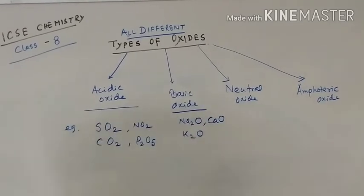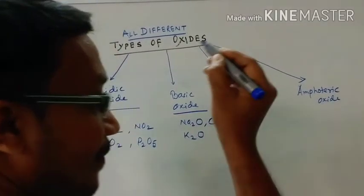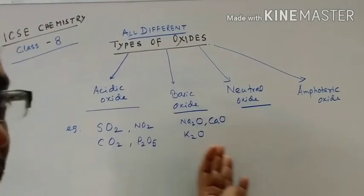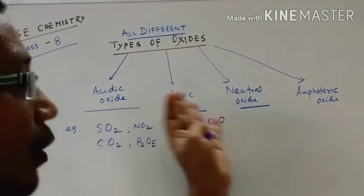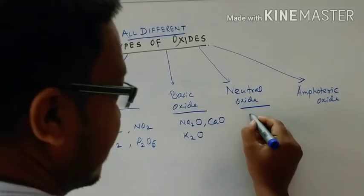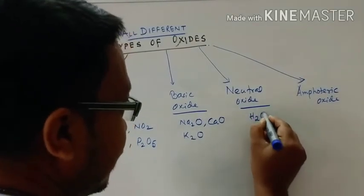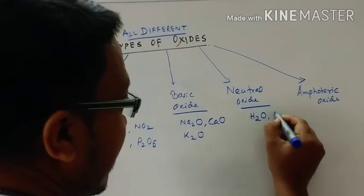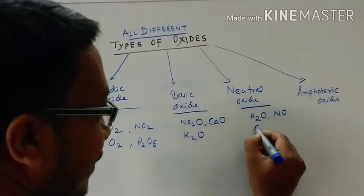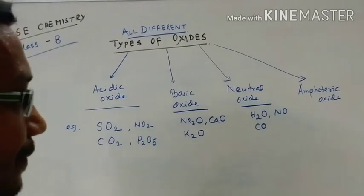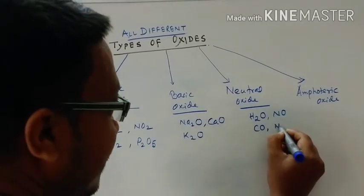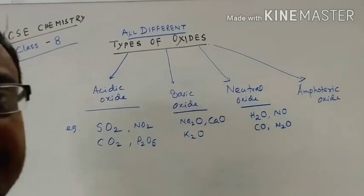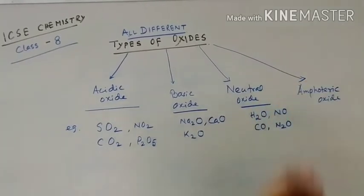Neutral oxides — some of these are also non-metallic oxides. Examples are water (hydrogen monoxide), nitric oxide, carbon monoxide, and nitrous oxide. These are all neutral oxides.